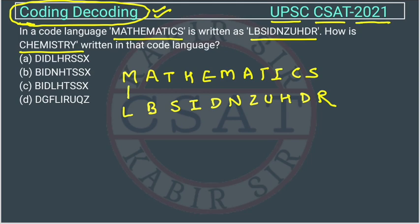Let's check: M got converted into L. Since L comes before M in the alphabet, this is minus one. In the second position, A is converted into B — that's plus one, meaning the letter is shifted to the next letter in the alphabet.